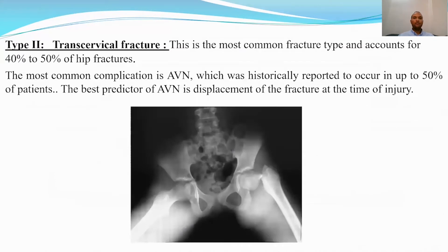Type 2 is the most common type of pediatric hip fractures, the transcervical type, accounting for about 50% of cases. Unfortunately it is associated with a higher incidence of AVN — about 50% of cases.